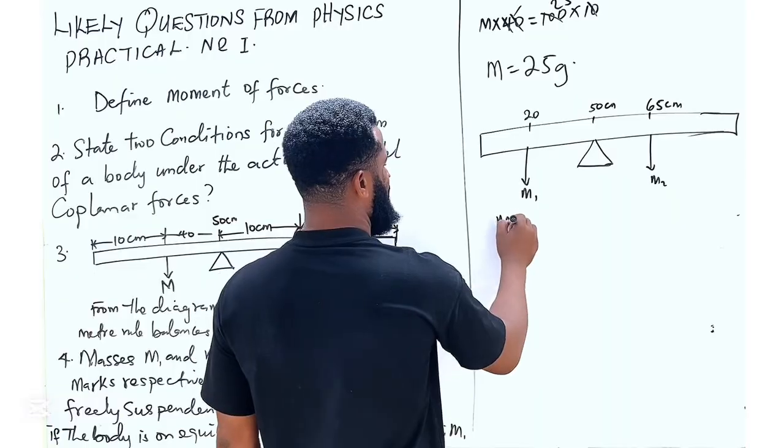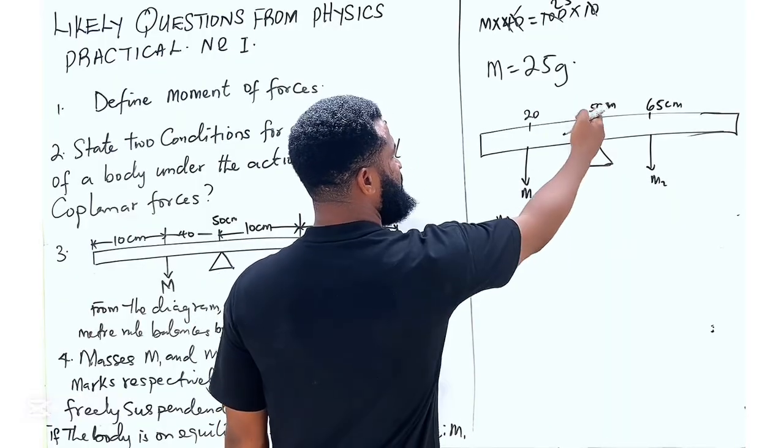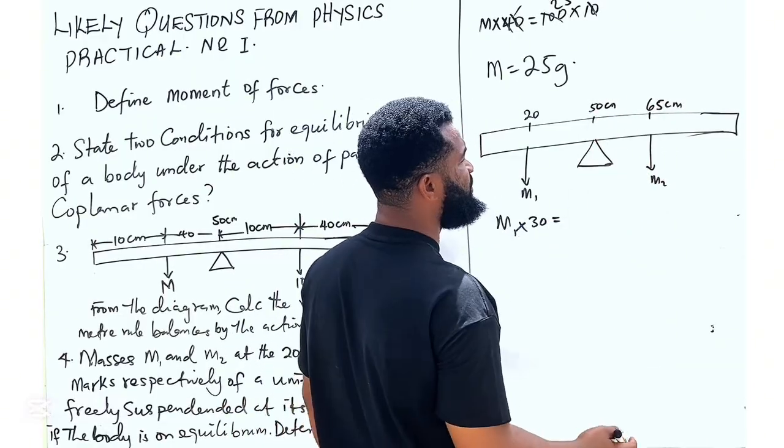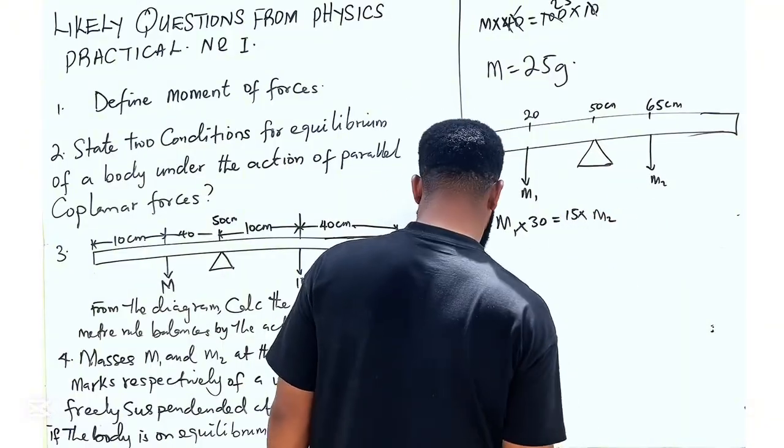So this is going to be m1 times this to this place is 30. Simply say 50 minus 20, which is 30 and must be equal to 65 minus 50 is going to be 15 times m2.